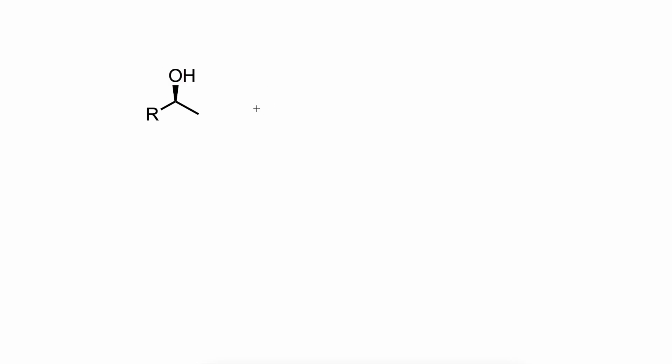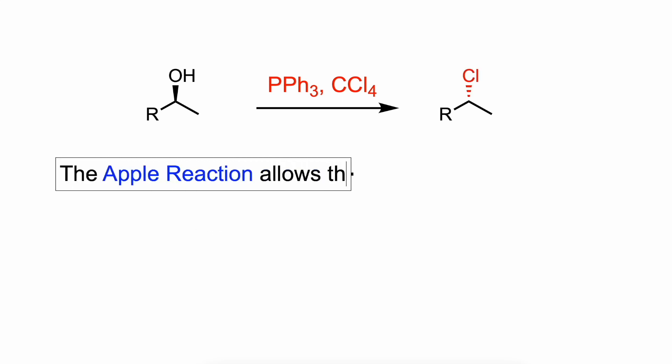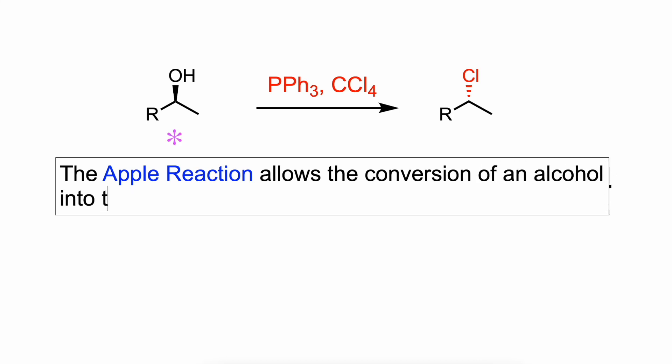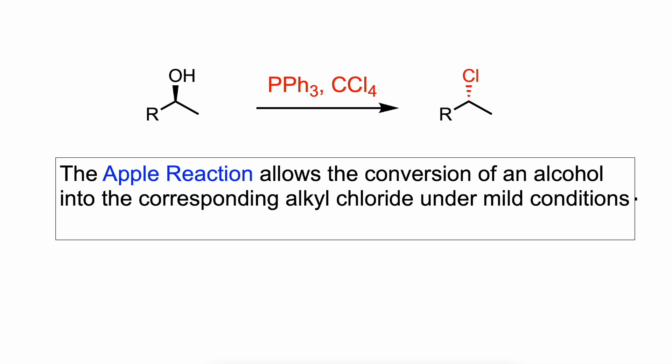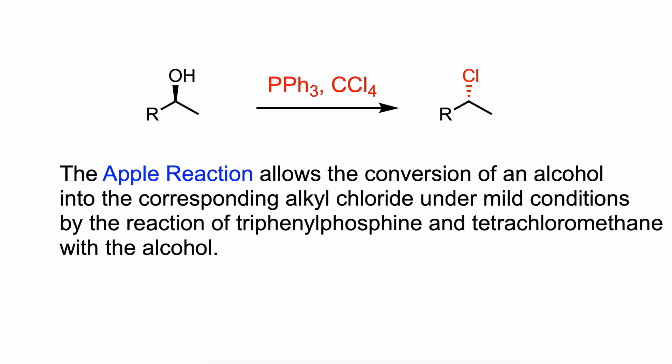Hello everyone, in this video I'm going to talk about the Appel reaction. The Appel reaction allows the conversion of an alcohol into the corresponding alkyl chloride under mild conditions by the reaction of triphenylphosphine and tetrachloromethane with the alcohol.